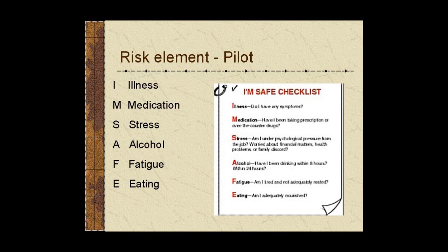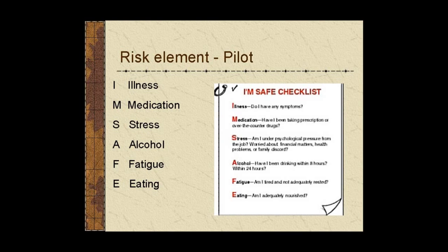The first risk element is pilot — we cover this extensively in the human factors module. Illness: you're not going to fly if you're sick, because you can't think properly when feeling bad. Medication: talk to your doctor to confirm it's okay to fly. Stress will definitely affect your thinking ability and risk assessment. Alcohol — we know all about that. Fatigue: if you're tired, you cannot effectively judge your own tiredness or whether you're making proper decisions. Eating: if malnourished or dehydrated, your brain won't operate and you can't make proper decisions.